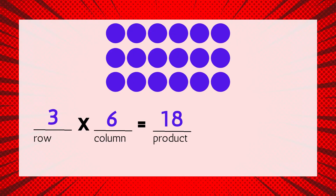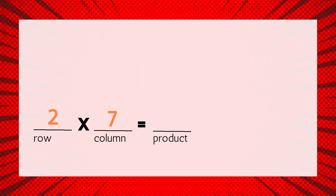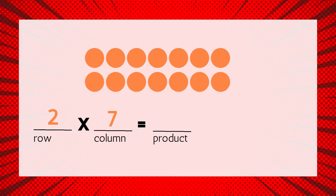Let's keep going. This equation says 2 times 7 equals something. Let's draw an array that has 2 rows with 7 in each row. Next, we want to count the circles to find the total, which is our product. We can count by 2s or 7s. Let's count by 2, seven times: 2, 4, 6, 8, 10, 12, 14. There are 14 circles in all — that's our product. Our multiplication equation reads 2 times 7 equals 14.